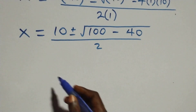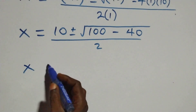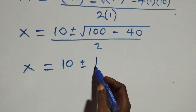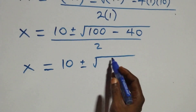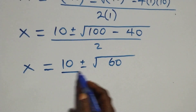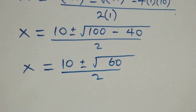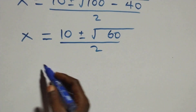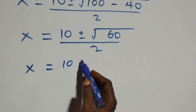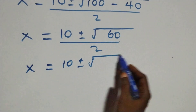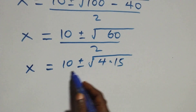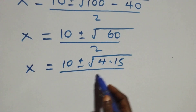So we have x equals to 10 plus or minus square root of 100 minus 40, where 100 minus 40 gives us 60, then over 2. We can write this as x equals to 10 plus or minus square root of 4 times 15, over 2.